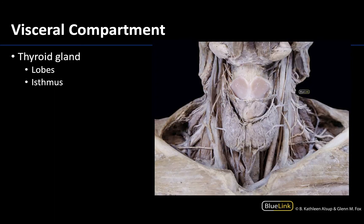Let's start with the thyroid gland and get our bearings in terms of some of the other pertinent structures. You'll have the carotid sheath contents laterally on both sides. You can see a bit of the thyroid cartilage right here; the hyoid bone would be up in this region. The trachea is going to be deep, and right in this region you'll have a fairly dominant butterfly-shaped structure called the thyroid gland. This is the largest endocrine gland — there will be two lobes, a left and a right, connected by the midline pinched-in area called the isthmus.